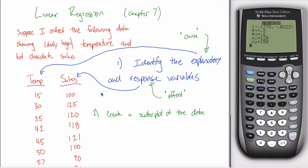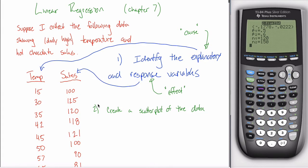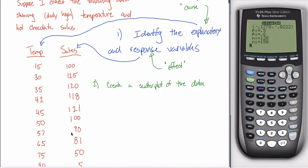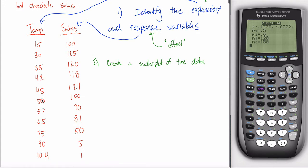All right, more linear regression. So in the previous video, I introduced this example where we are trying to study the correlation between temperature and hot chocolate sales. So I randomly select, I think there are 11 days here.